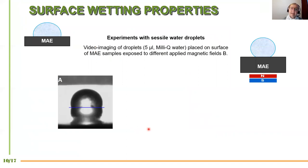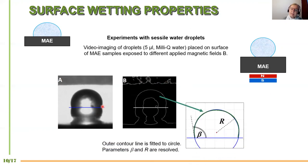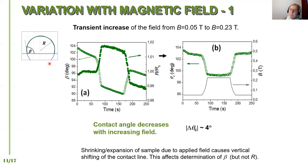Another phenomenon we investigated was surface wetting properties. We are aware that surface roughness can affect wetting characteristics, and rough surfaces are typically hydrophobic. So we expected that when we put water on the surface of our magneto-active elastomers and apply a magnetic field — knowing from previous studies that surface roughness increases — the contact angle would also increase and the surface would become hydrophobic. We analyzed droplets of very low volume, which had a spherical shape, and measured the contact angle with respect to the surface.